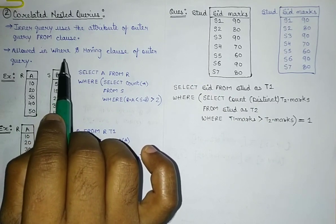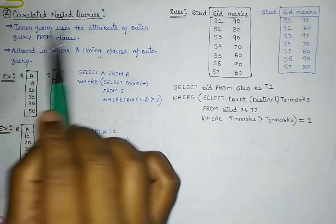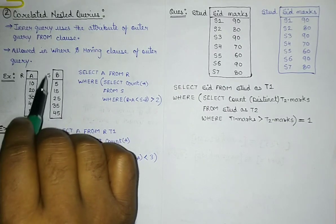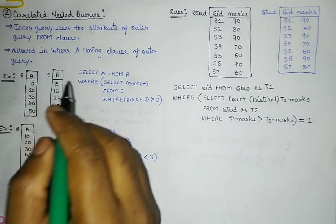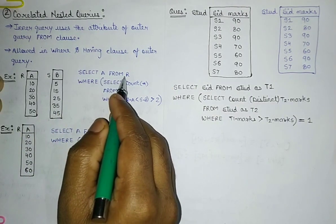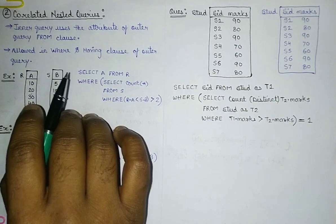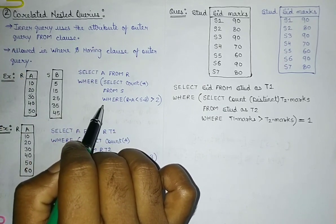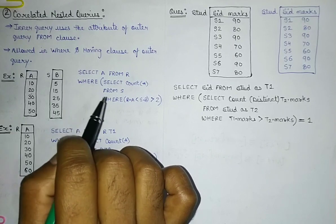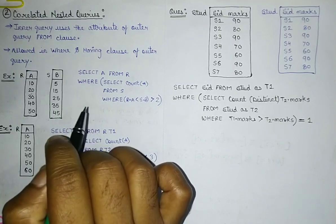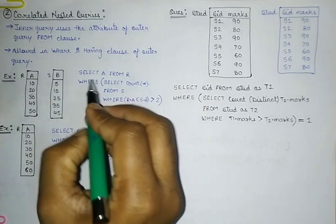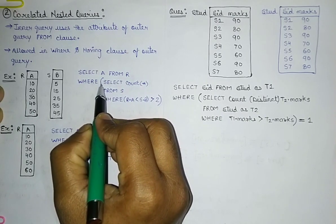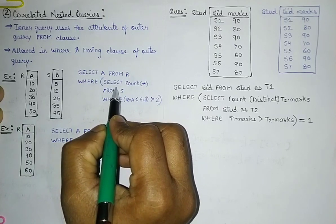Let's understand this with an example. I have relations r and s with attributes a and b respectively. The query is: SELECT a FROM r WHERE... These correlated nested queries can be used in two ways — in WHERE and HAVING clauses. First I'll discuss the WHERE clause, then in a few moments the HAVING clause. So: SELECT a FROM r WHERE SELECT COUNT...